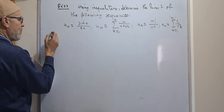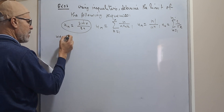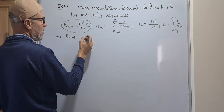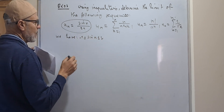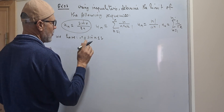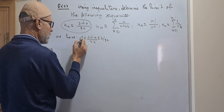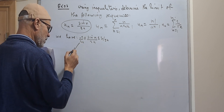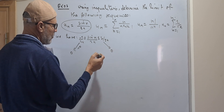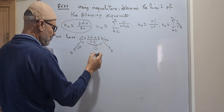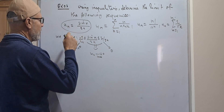We start with the first one. For all n in ℕ, we have minus 1 ≤ sin(n) ≤ 1. Since 1 over 2n is positive, if we multiply the double inequality by 1 over 2n, we get a squeezed inequality. When n goes to plus infinity, both bounds go to 0, which implies that u_n goes to 0 when n goes to plus infinity.